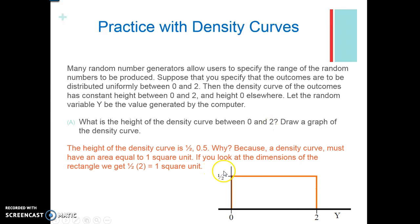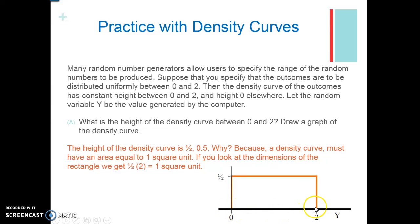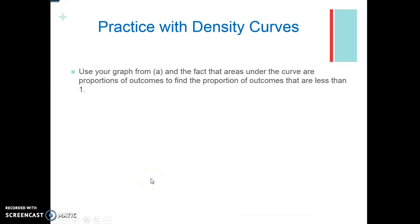You should have gotten 0.5. The reason is we're between 0 and 2 with uniform height, creating a rectangle. Why 0.5? A density curve must have an area of 1. The width is 2, so 2 times what number gives us 1? One-half times 2 gives us 1 square unit.